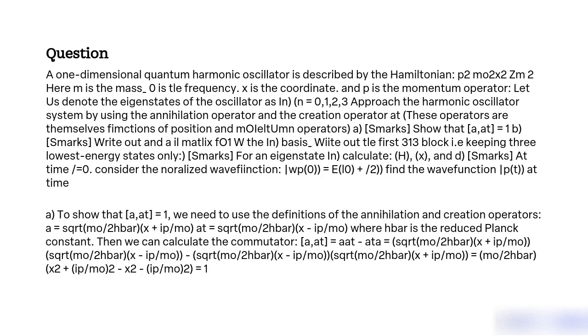To show that [a,a†] = 1, we need to use the definitions of the annihilation and creation operators: a = √(mω/2ℏ)x + ip/√(2mωℏ) and a† = √(mω/2ℏ)x - ip/√(2mωℏ), where ℏ is the reduced Planck constant.